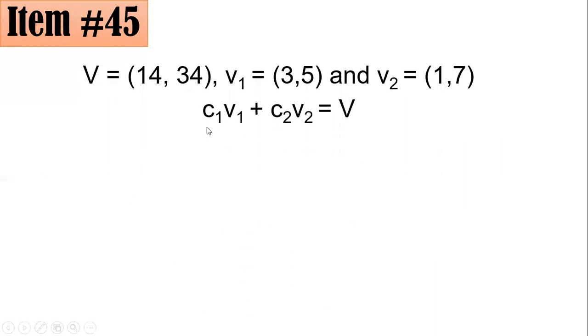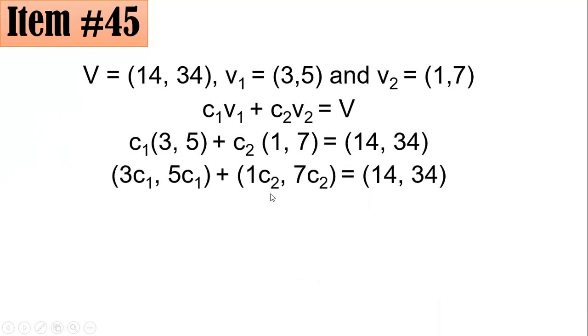So let's discuss it now. So from here, using this definition, we have C sub 1 times V sub 1 which is (3, 5) plus C sub 2 times the second vector which is (1, 7) equals (14, 34). So distributing the C sub 1s here and the C sub 2s here, you have (3C sub 1, 5C sub 1) plus (C sub 2, 7C sub 2) equals (14, 34). 3C sub 1 and 1C sub 2 are the first elements and their sum here is 14. Hence, you have 3C sub 1 plus C sub 2 equals 14, and for the second element, 5C sub 1 plus 7C sub 2 is equal to 34 respectively.